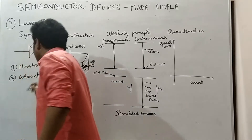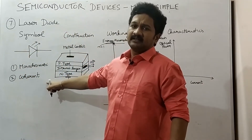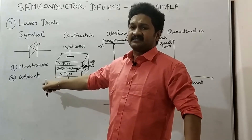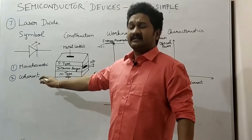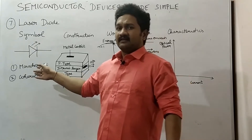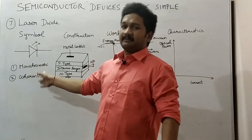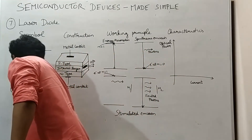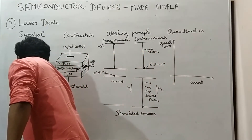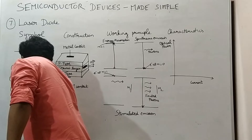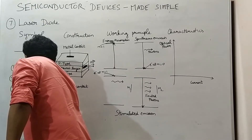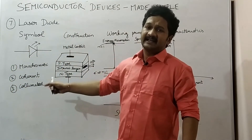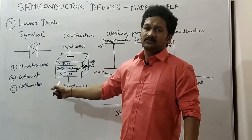The next property is coherent. The word coherent means a laser beam is highly in phase, or it is not out of phase when it is emitted. The third one is collimated — it means it is a highly directional beam so that it can be focused on a single direction.